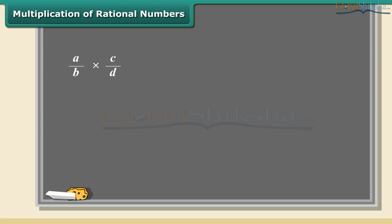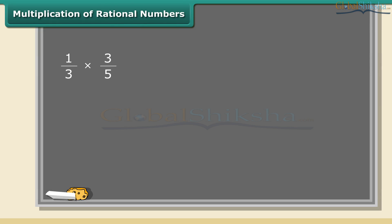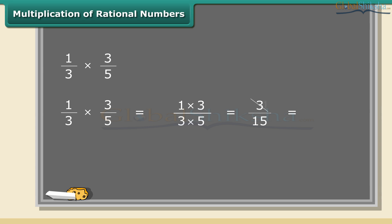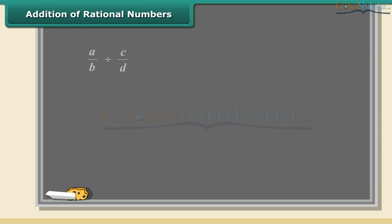Now we will study multiplication of rational numbers — this is the easiest one. To multiply two rational numbers, just multiply the numerators and denominators separately. Here is an example: we will multiply 1 by 3 and 3 by 5. First multiply the numerators, then multiply the denominators. This fraction can be further simplified to 1 by 5.